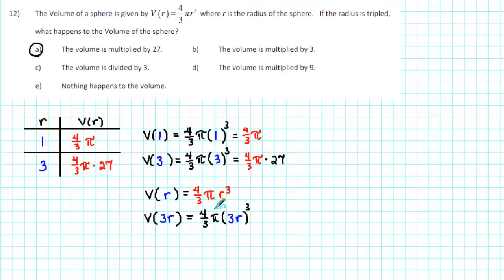We get (4/3)π times the cube of 3r. The cube of 3r is 3r times 3r times 3r, which is 27r³.